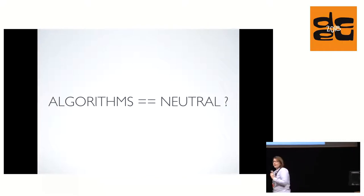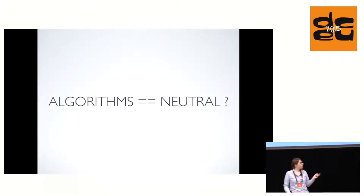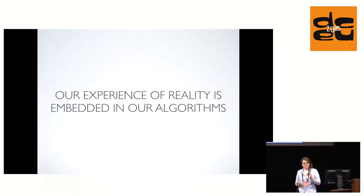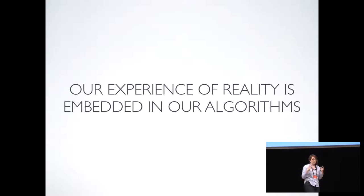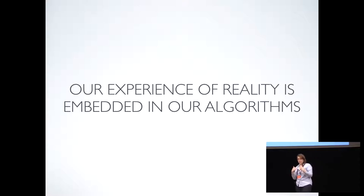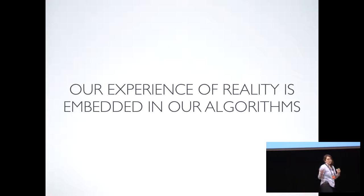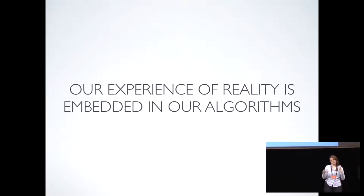Are algorithms neutral? What is an algorithm but a model of the way we as humans make decisions? Basically, it is our model of the world translated into a procedure. If you start with our model of the world — the way we see things — our reality is biased because we have unique perspectives and we're human. Then you realize that if algorithms have our model of the world, the algorithms become biased.